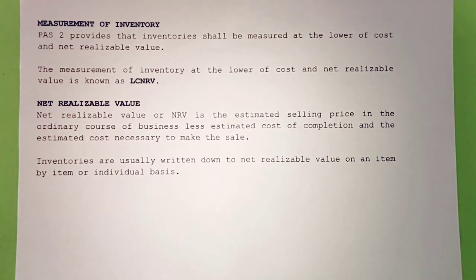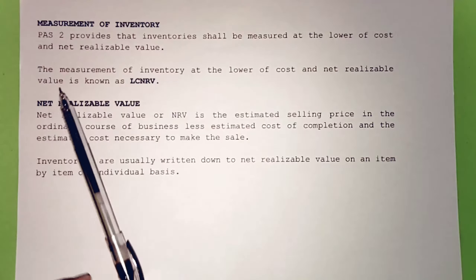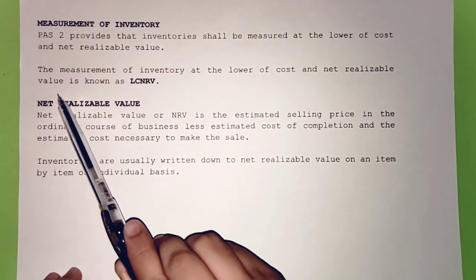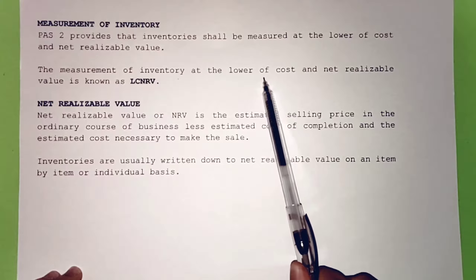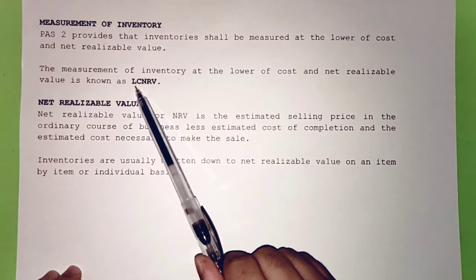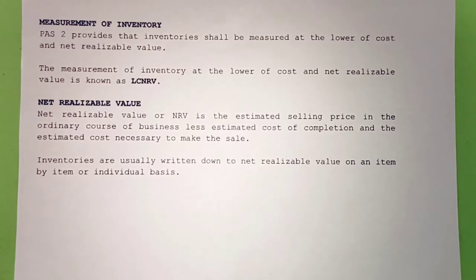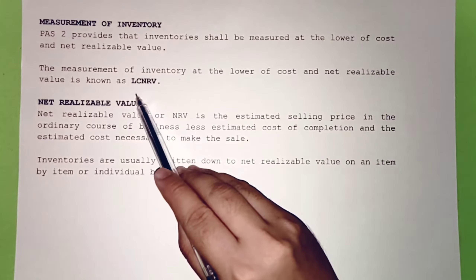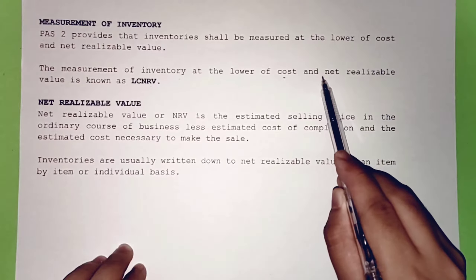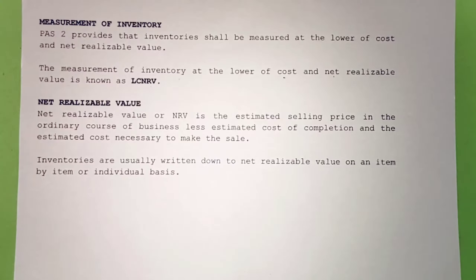Measurement of Inventory. PAS 2 provides that inventory shall be measured at the lower of cost and net realizable value. The measurement of inventory at the lower of cost and net realizable value is known as LCNRV — lower of cost and net realizable value.